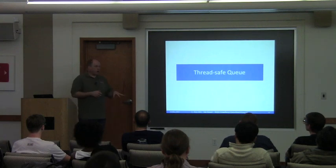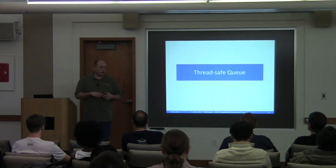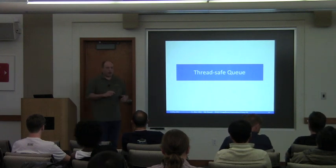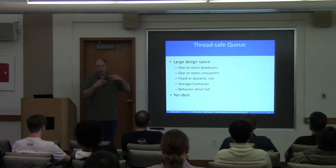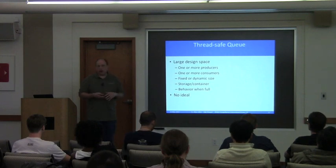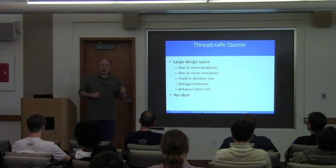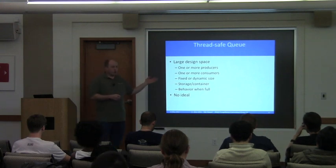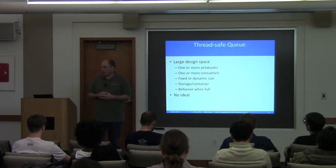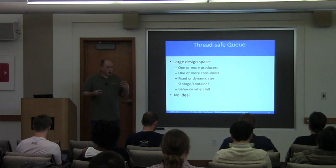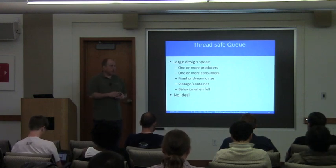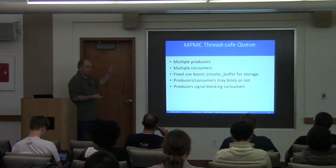If there are no questions about mutexes, lock guards, and condition variables, we can go on and build a thread-safe queue. It's a large design space: multiple vs. single producers, multiple vs. single consumers, dynamic vs. fixed size, what container to use underneath, and what to do when it's full — block the producer, throw out the oldest, throw out the newest, or silently not push. There's no ideal because it depends on how you're using the queue. We'll allow multiple producers and multiple consumers, use a Boost circular buffer for storage, fixed size, and allow producers and consumers to decide whether or not they block.